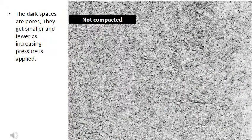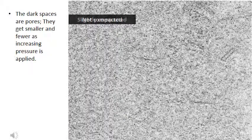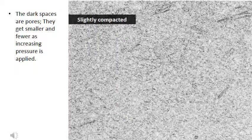These images are taken from pictures of the soil in the jars in the previous slide and edited to show the aggregate and pore arrangement in the soil. The progression in the slides is from no compaction to severely compacted. The dark spaces are pores. They get smaller and fewer as increasing pressure is applied.